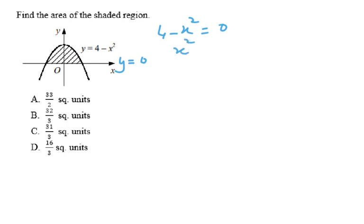Hence, x squared will be equal to 4, where x will be plus or minus 2, which means that this point will be negative 2, and this point will be 2.